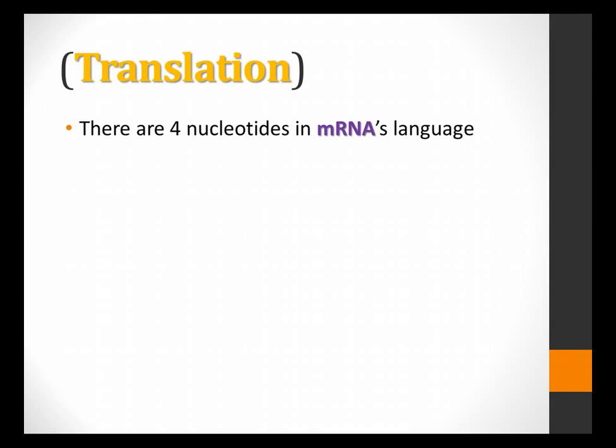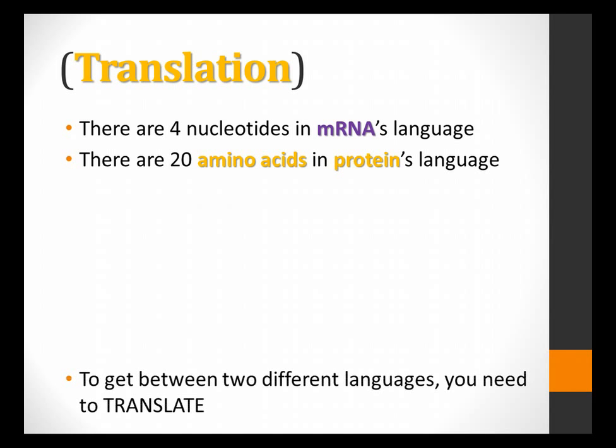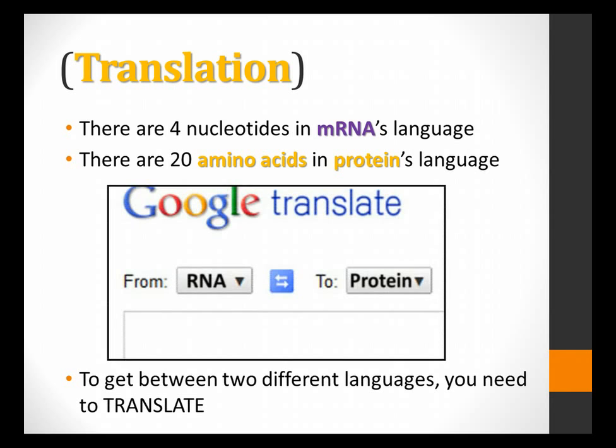Now, RNA has four nucleotides: A, U, C, and G. Remember, U instead of T in RNA. However, protein is a different language. It has amino acids, and there are 20 of them. So what I'm left with here is a problem. I need to get between two languages. Well, how do you get between two languages? You need to translate. So in this case right here, we almost need a Google translator, something to go from the language of RNA to the language of protein. Well, there is such a thing.